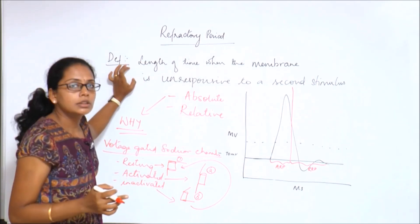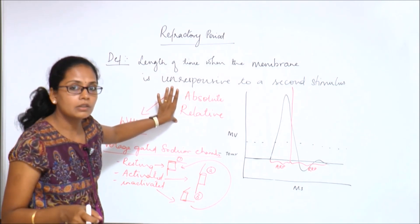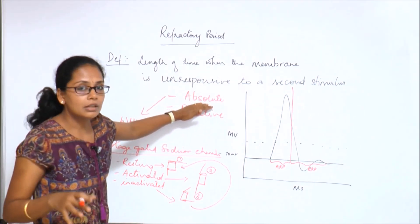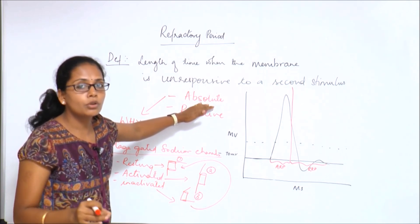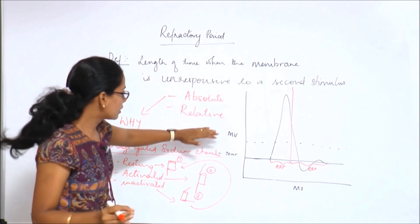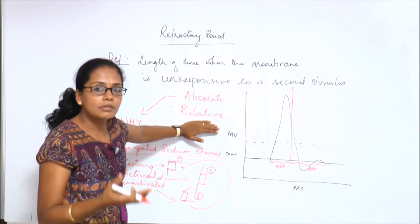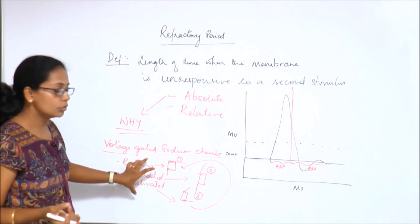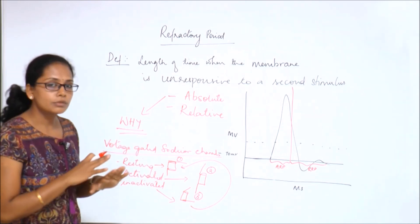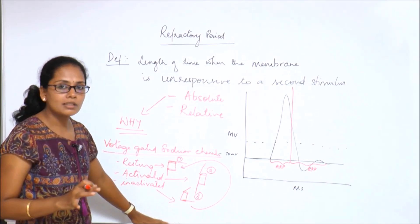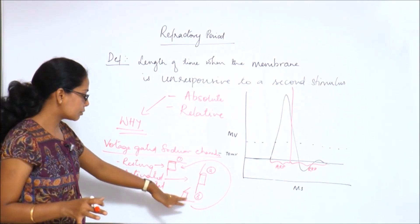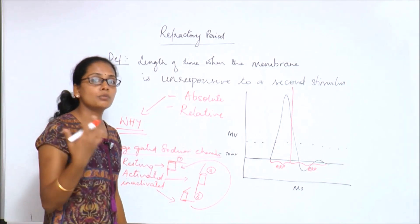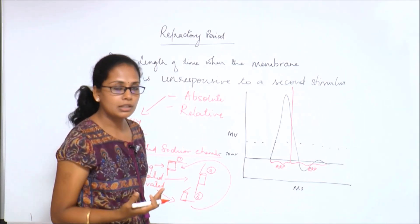To summarize: you should know the definition of the refractory period, the two types — absolute and relative — and the definition of each. The absolute refractory period is the period when the nerve does not respond to a second stimulus however strong it is. The relative refractory period is the period when the nerve responds only if the stimulus is very strong. You should also know the ionic basis: during the absolute refractory period the sodium channels are in an inactivated state, and during the relative refractory period the sodium channels are returning to their resting state and can be stimulated again.